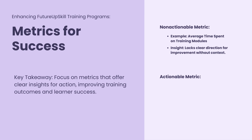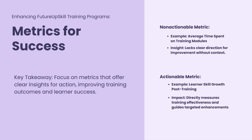An actionable metric, on the other hand, could be learner skill growth post-training. This is a golden metric because it shows you exactly what you're achieving. By measuring skill levels before and after training, you see clear trends: are learners improving, and where are they struggling? This information is actionable because it highlights what's working and what's not, allowing you to make targeted improvements to your training programs.